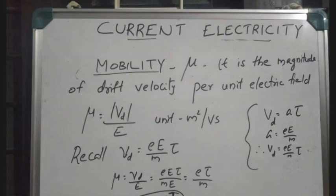In the derivation of drift velocity: acceleration a is equal to eE by m, where e is charge, E is electric field, and m is electron mass.